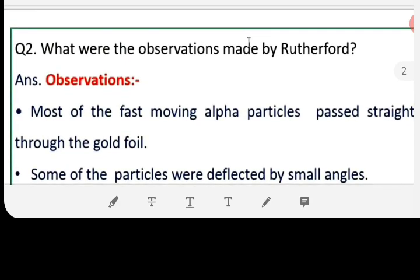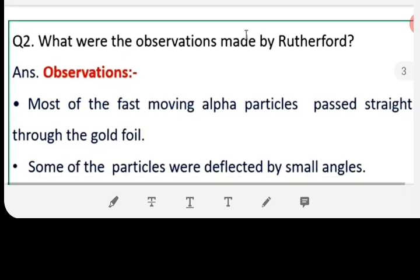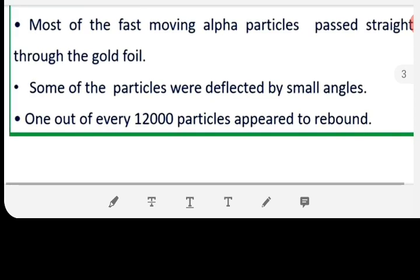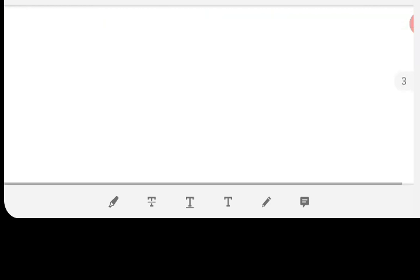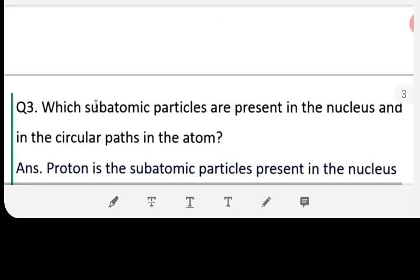Question 2: What were the observations made by Rutherford? The observations were: Most of fast-moving alpha particles passed straight through the gold foil. Some of the particles were deflected by small angles. One out of every 12,000 particles appeared to rebound.